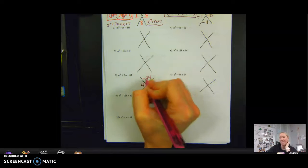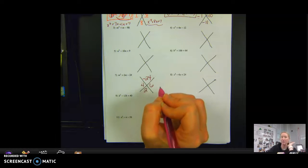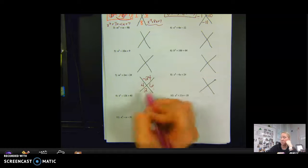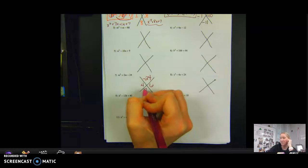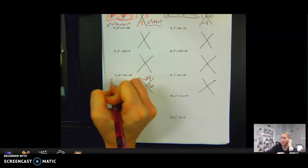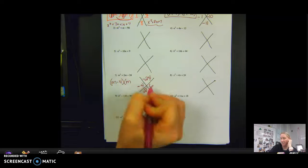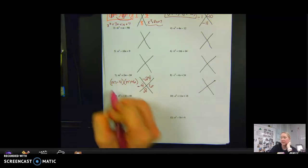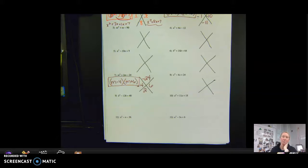So that means that one of the two numbers has to be negative. So now we have to figure out which number is negative. Well, I want a positive 2 when I add these. So the only way to get a positive 2 when I add would be if I have a negative 4 and a positive 6. So to factor this, it goes m minus 4, m plus 6. Again, order does not matter. So you could have m plus 6 and then m minus 4.